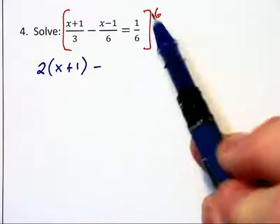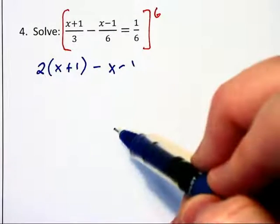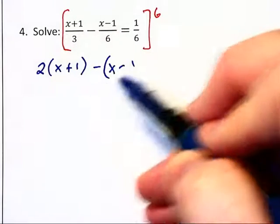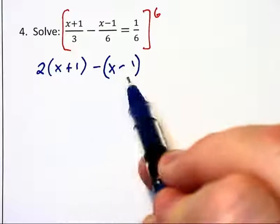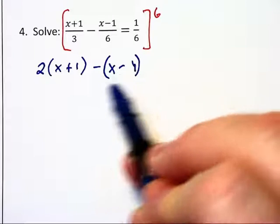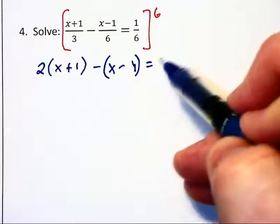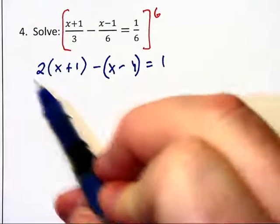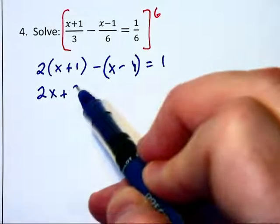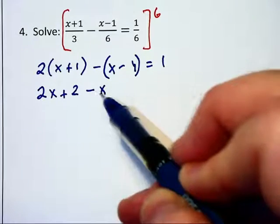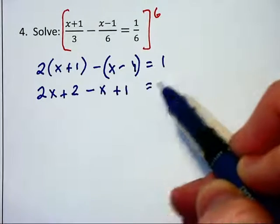If you just say the 6's cancel and you go x minus 1, you're going to get this wrong, because you need to distribute that negative to that numerator, and therefore the parentheses really are necessary. On the right, the 6's cancel and you just have equals 1. So doing the distribution, we have 2x plus 2 minus x plus 1 is equal to 1.